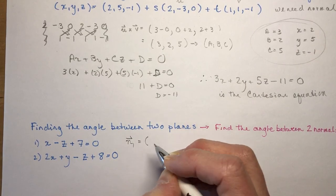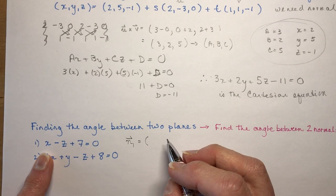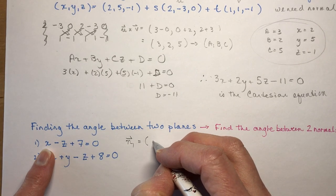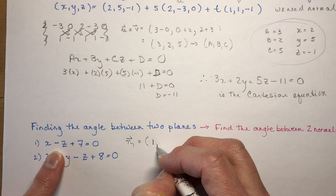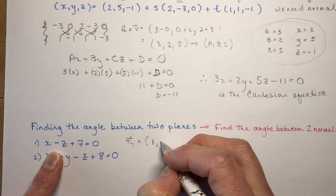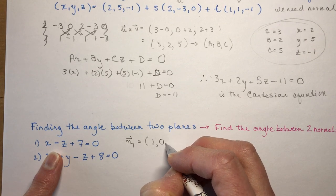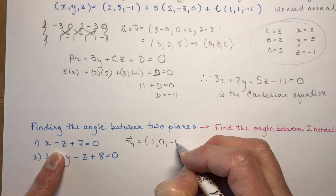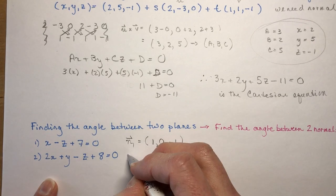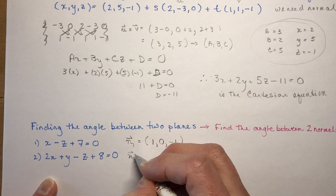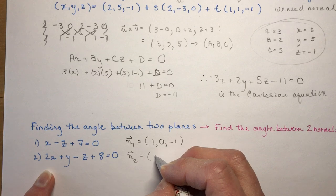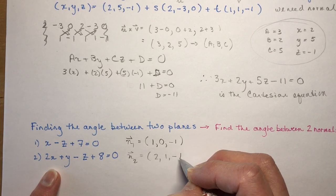So let's call that normal one. That's going to be, so it's the coefficients of X, Y, and Z. So the coefficient of X is one. I don't have any Y's. What should I do? That means zero Y's then. And we have minus one for the Z. And for this plane, our normal is going to be two, one, and minus one.